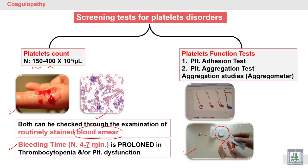The normal range for bleeding time is four to seven minutes, with normal platelets and normal blood vessels. It will be prolonged if there is abnormal platelet function — thrombocytopenia (decreased count), thrombasthenia (abnormal function), or a vascular defect.